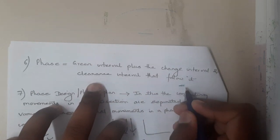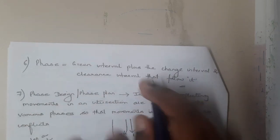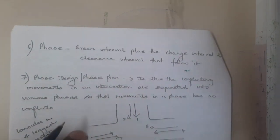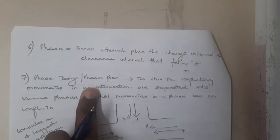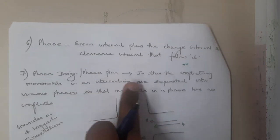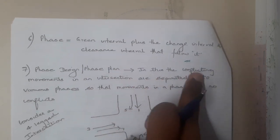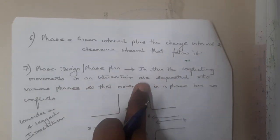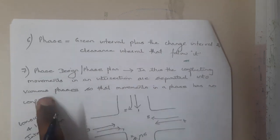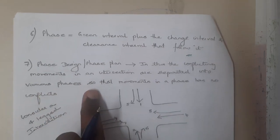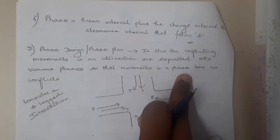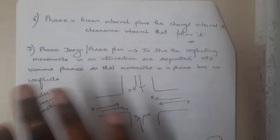Phase designs or phase plans: the conflicting movements at an intersection are separated into various phases, so the movements within each phase have no conflicts.